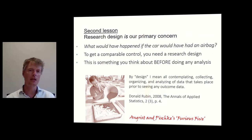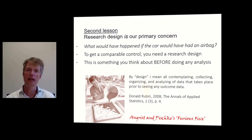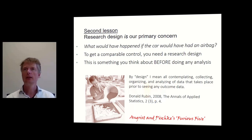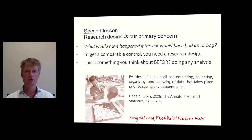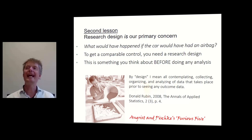Our concern is with identification — how do we actually estimate the effect? This can only be done by having a comparable control group, and to get a comparable control group you need a research design. A design is something you have to think about before doing your analysis — running regressions is not something you start with. You first think about your design, then come up with a specification, and then go to your data and run your regression. As Donald Rubin puts it: by design, I mean all contemplating, collecting, organizing, and analyzing of data that takes place prior to seeing any outcome data.